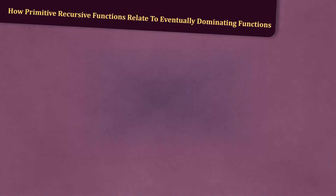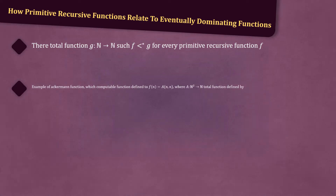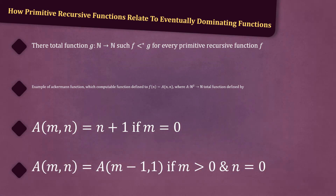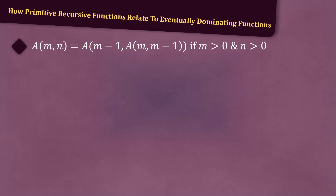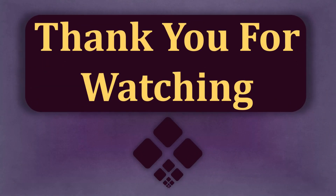Let's discuss how primitive recursive functions relate to eventually dominating functions. There is a total function g from the natural numbers to the natural numbers such that f <* g for every primitive recursive function f. An example of which is the Ackermann function, which is the computable function defined to be f_n equals A(n, n), where A goes from the natural numbers to the natural numbers and is a total function defined by: A(m, n) = n + 1 if m = 0; A(m, n) = A(m − 1, 1) if m > 0 and n = 0; and A(m, n) = A(m − 1, A(m, n − 1)) if m > 0 and n > 0. Thank you for watching.